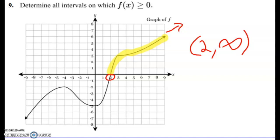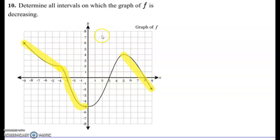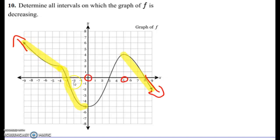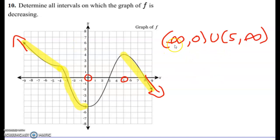Last example: determine all intervals where the graph of f is decreasing. It's going down from negative infinity all the way to zero, then starts going up, then at x equals 5 it starts going down again to positive infinity. So the two intervals are: negative infinity to 0, and 5 to infinity. That covers determining positive and negative, increasing and decreasing domains from a graph using interval notation. Thanks for checking out Mr. Ware's videos!